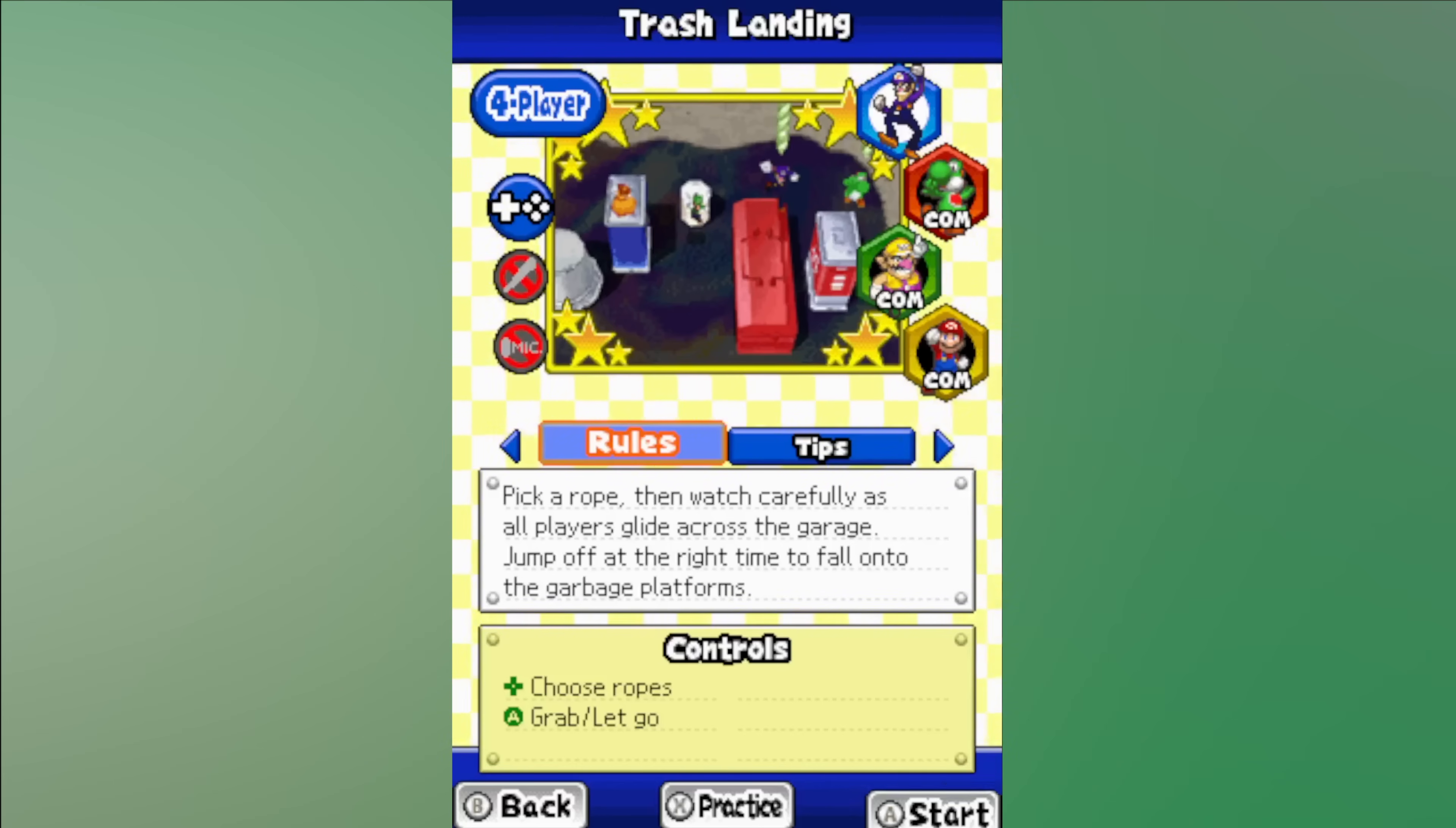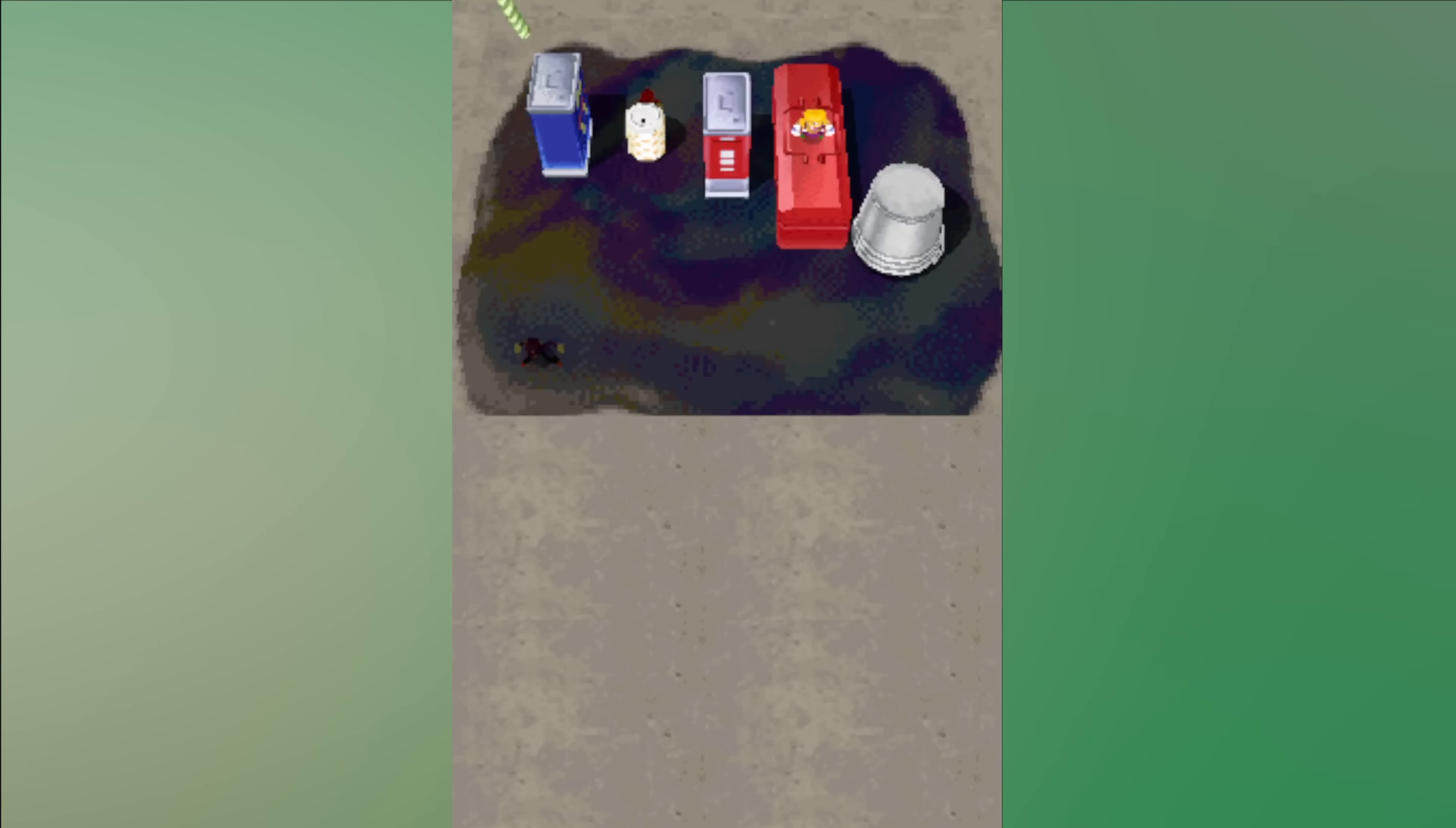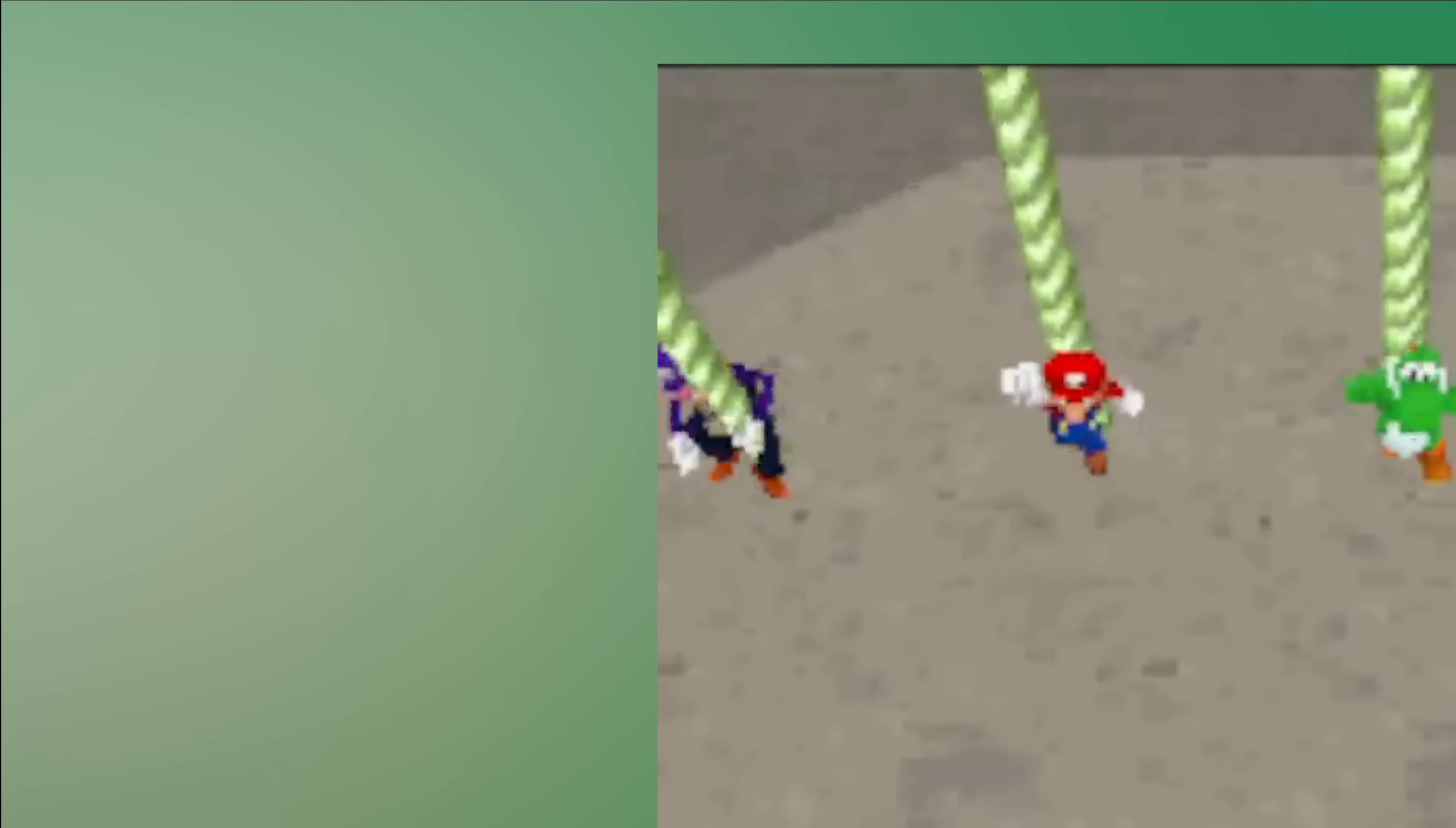For the next game I decided on Trash Landing. At the start you pick a rope and then you have to time your jump by pressing A to land on one of the randomly placed containers. If you press too early or too late you fall into the goo and lose. After playing the game a few times I noticed a consistent strategy for winning. You can pretty much always land perfectly if you let go when the platform is near the top of the touch screen.